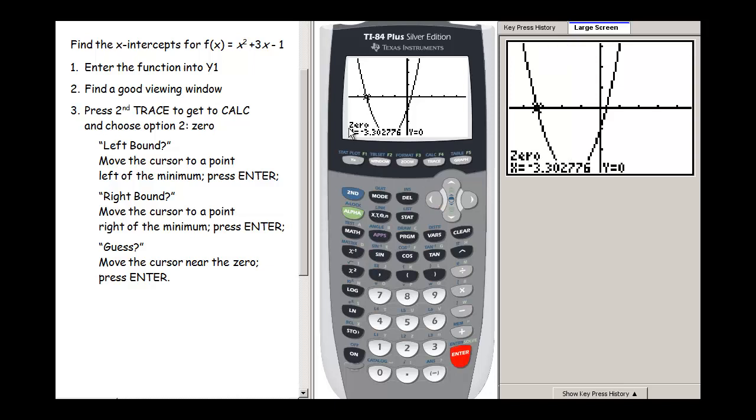I know the process is done once I see that word zero. My first zero is at x equals, let's round to four decimal places, negative 3.3028. The y-coordinate is zero. Alternatively, you could just write x ≈ -3.3028.